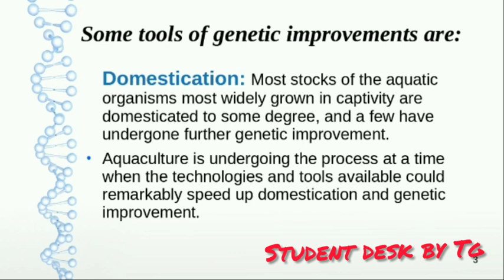In domestication, we grow organisms in captivity. If we don't have any results from domestication, then we apply further genetic improvement tools and stages. But if domestication is successful, we do not need to apply further genetic improvement techniques. Aquaculture has undergone this process from the beginning, and when all tools and techniques are applied properly, the eco-culture rate is very good.